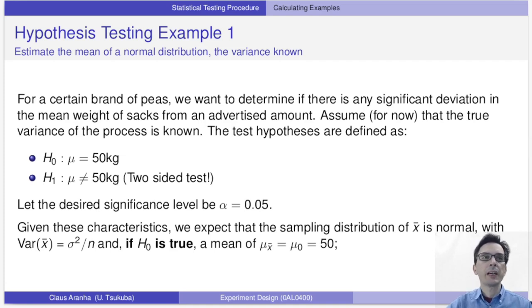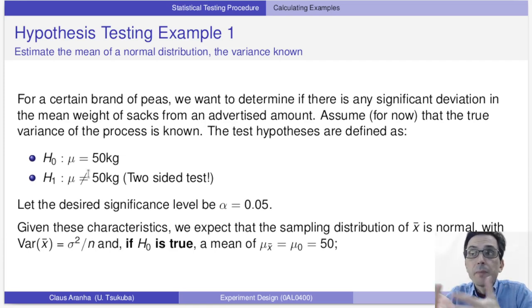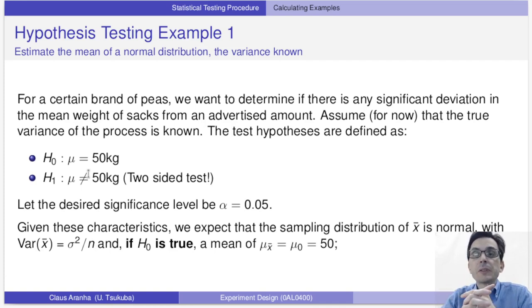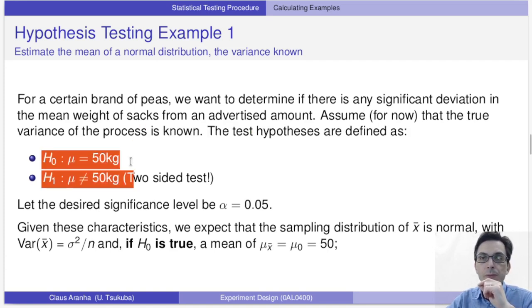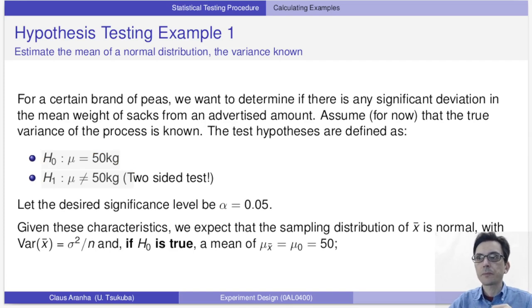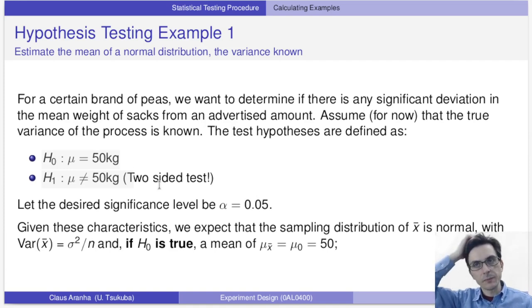Let's consider an example calculation of the hypothesis test, similar to the chocolate factory example. There is a brand of peas and you are a consumer checking if the weight of the bag is different from what is stated on the bag. We assume we know the true variance of the production distribution. We define the null hypothesis as mu equals 50 kilos, and the alternate hypothesis as the true mean not being 50 kilos. Since the alternate hypothesis allows the true mean to be more or less than 50, this is a two-sided test. The desired significance is 0.05.